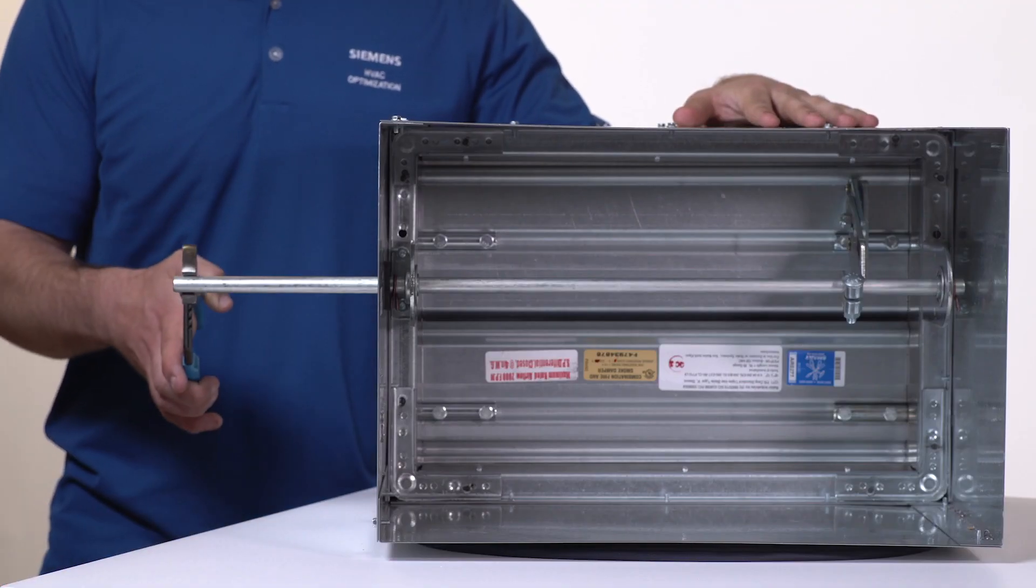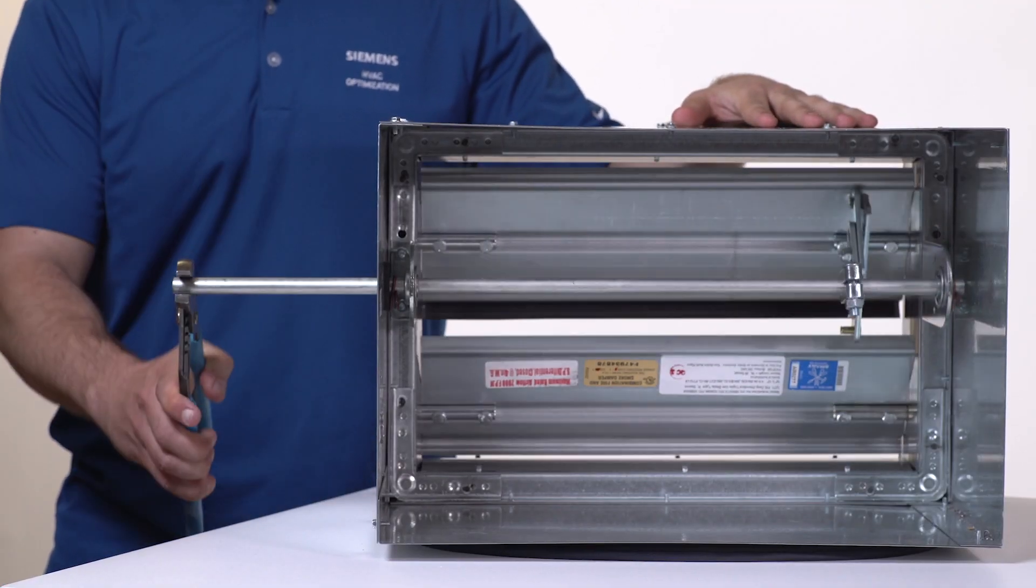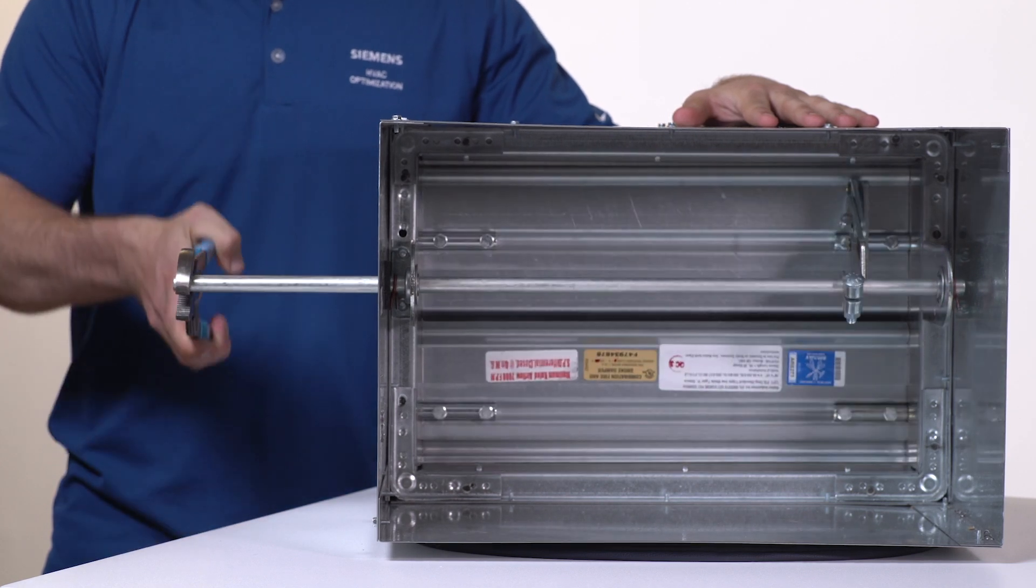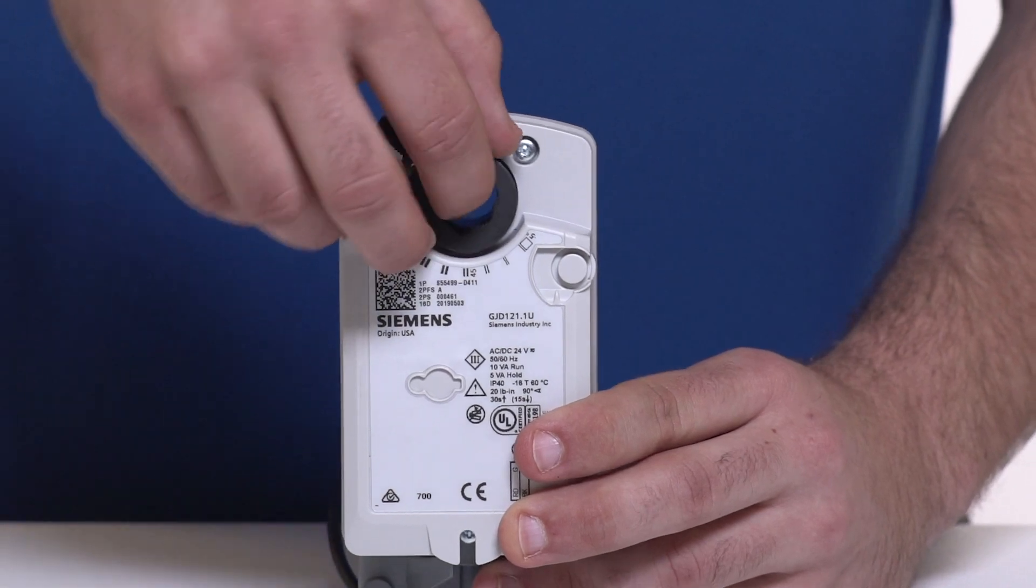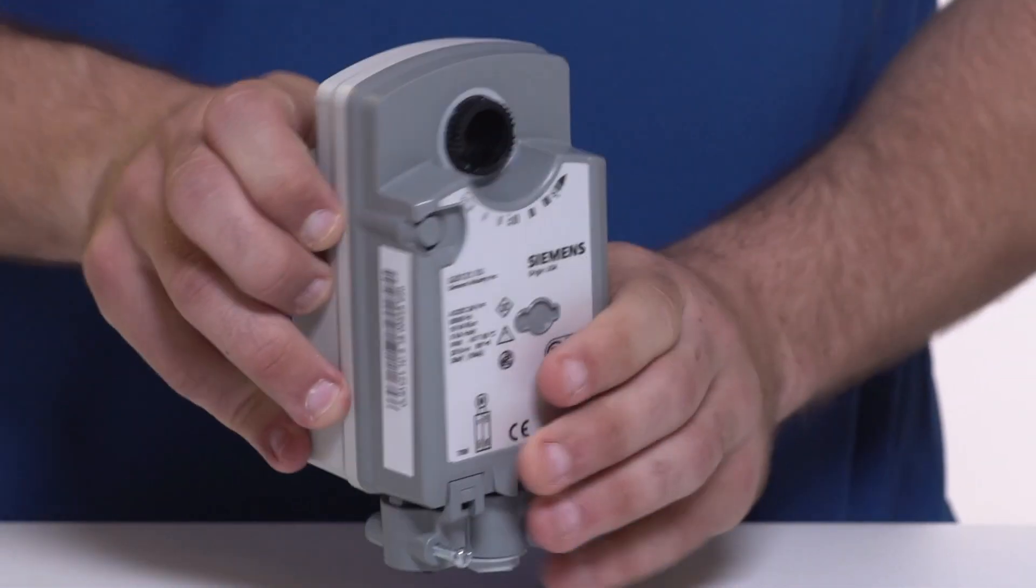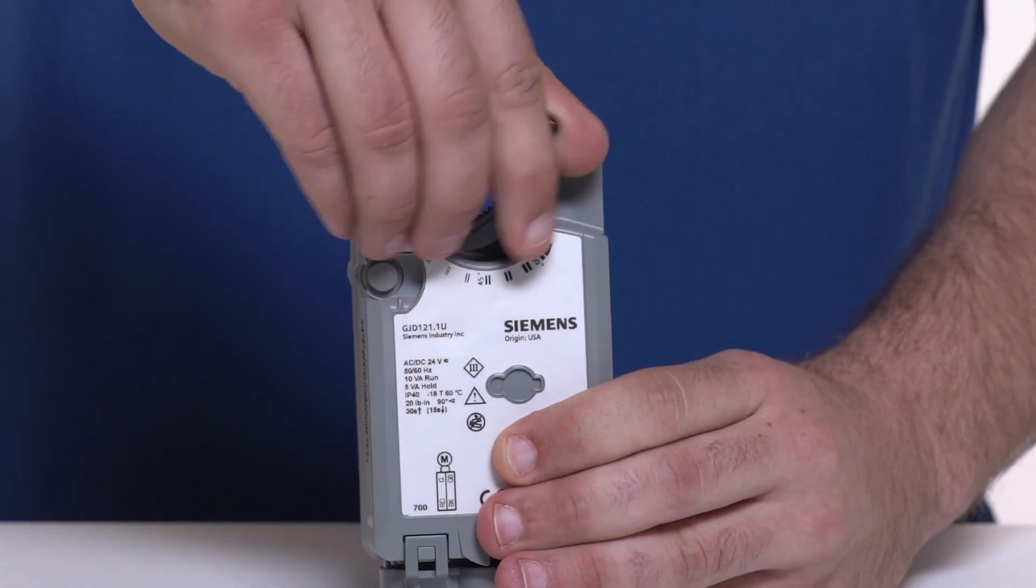Now determine the orientation of the actuator based on the rotation of spring return to fail open or fail close. If the actuator is not in the desired rotation, remove the locking clip and shaft adapter and reassemble on the other side of the actuator.